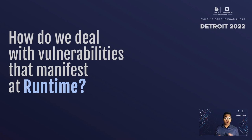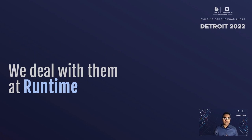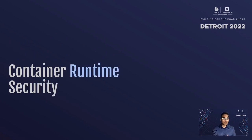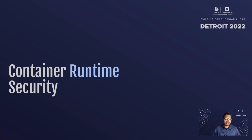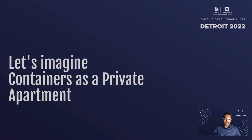So how do we deal with vulnerabilities that manifest at runtime? We deal with them at runtime — container runtime security. We actively monitor what's happening with our containers at runtime and try to detect malicious intent. To better understand, let's go through an analogy. Let's imagine containers as a private apartment.